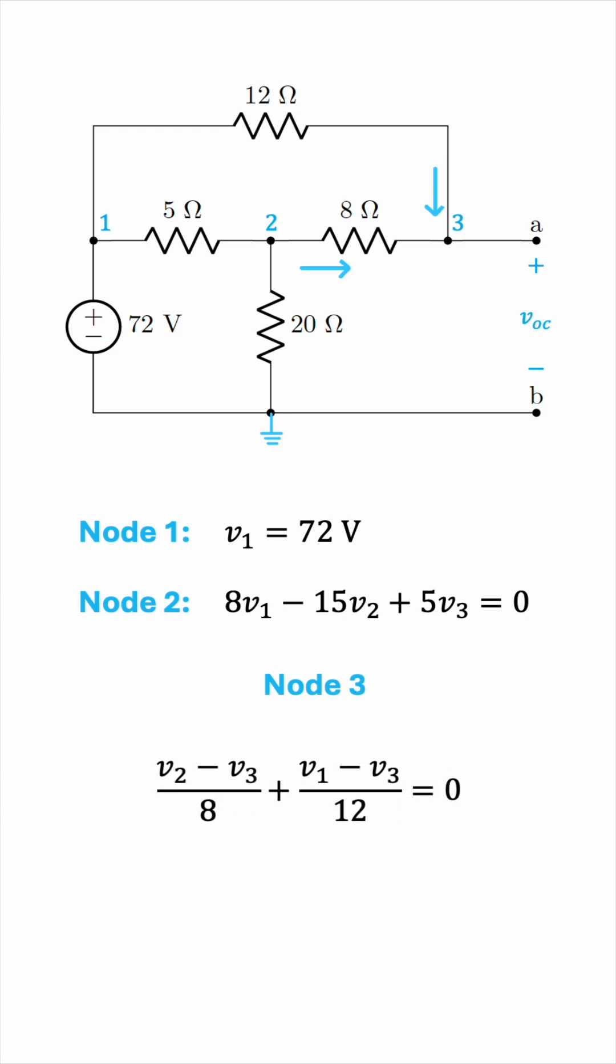Again, let's multiply by the least common multiple, which is 24 in this case, to clear the denominators. Simplifying and combining like terms, we end up with 2V1 plus 3V2 minus 5V3 equals 0.